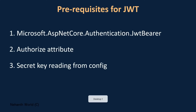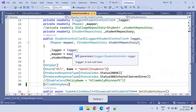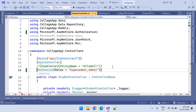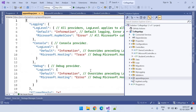The third prerequisite is the secret key. When we are generating the JWT token, we need a secret key — we discussed this in earlier videos when covering the algorithm. We are going to use an algorithm that requires a secret key. Let's add the secret key and read it from the config. I'll comment out the AllowAnonymous and Authorize attributes for now.